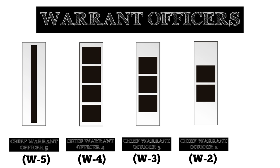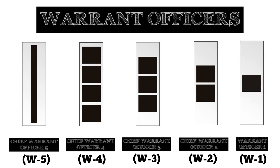Chief Warrant Officer Two are intermediate level experts in both the technical and tactical aspects of leading in their field, and they also perform duties at the detachment through to battalion levels. The rank insignia of a Chief Warrant Officer Two features a silver bar with two black stripes.